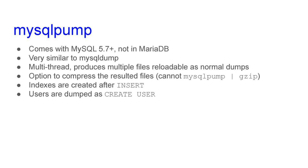Another tool is mysqlpump — the name is very similar, with a 'p' instead of a 'd'. It comes with MySQL 5.7 and is not in MariaDB. It is very similar to mysqldump but created to overcome its limitations. With mysqlpump you can use multiple threads to make a dump, making it much faster. There is an option to compress the results. Indexes are created after all inserts, so reloading the dump is also much faster. Also, users are dumped with CREATE USER statements rather than by dumping the MySQL system table.